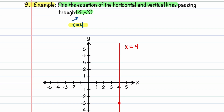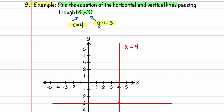Now let's draw our horizontal line through that point. When our horizontal line passes through that point, y is equal to minus 3. So that becomes the equation of our horizontal line. Let's mark this: our horizontal line is given by y is equal to minus 3.